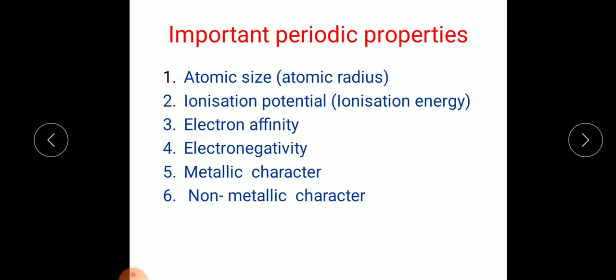The important periodic properties that we need to study are: first, atomic size or atomic radius; second, ionization potential or ionization energy; third, electron affinity; fourth, electronegativity; fifth, metallic character; and sixth, non-metallic character. These are the important periodic properties we need to discuss, along with the trends in group and period.